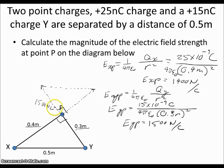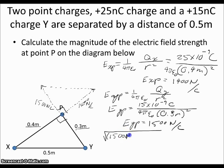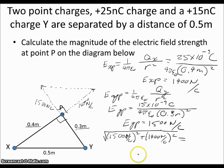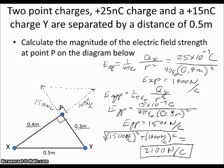With 1500 N/C acting in one direction and 1400 N/C acting in another, we add these using the Pythagorean theorem: the square root of (1500)² plus (1400)² gives us the resultant electric field strength of 2100 newtons per coulomb. We don't need to find a direction because we were only asked for the magnitude, so that's where we stop.